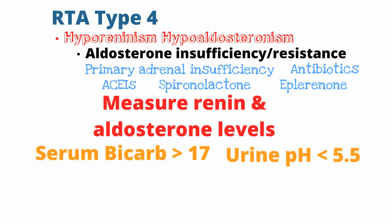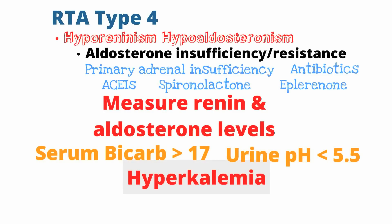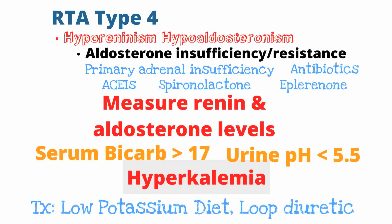The key diagnostic finding is measuring the renin and aldosterone levels. Generally the serum bicarb will be greater than 17 and the urine pH should be less than 5.5. But the key finding is hyperkalemia or elevated potassium. The treatment of RTA type 4 is a low potassium diet and a loop diuretic.